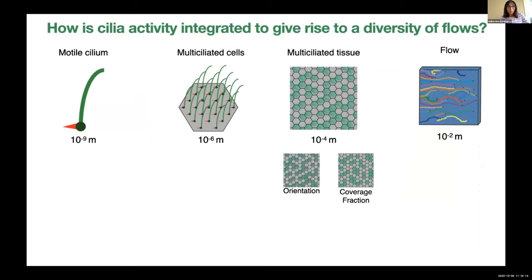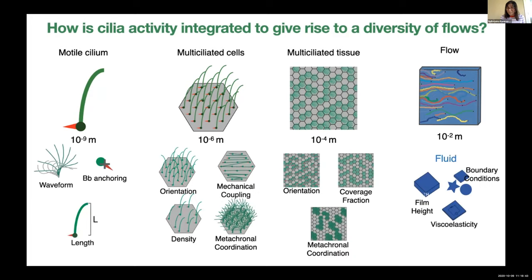I want to conclude this part of the talk. What I told you about is how the architecture of a multi-ciliated tissue gives rise to a flow optimized for function, and how orientation and coverage fraction are important control parameters in the case of the airway. This is a multi-scale problem with patterning at all different length scales influencing the architecture of flows. In my lab I'm trying to address all these different parameters by studying different biological systems, similar to the trachea, asking what patterning is built in and how it gives rise to function.